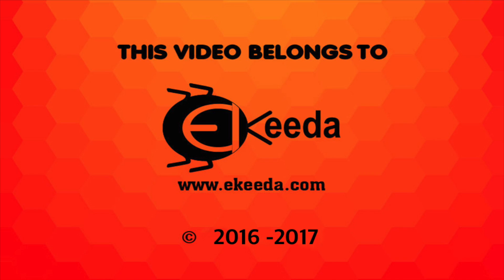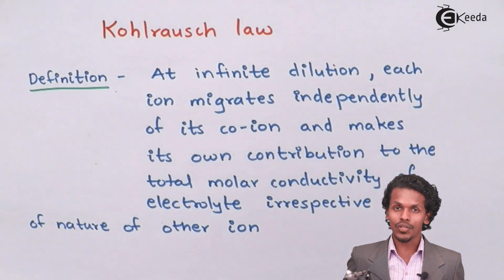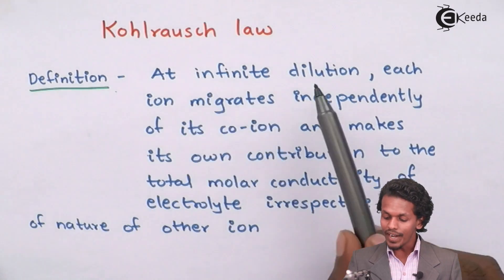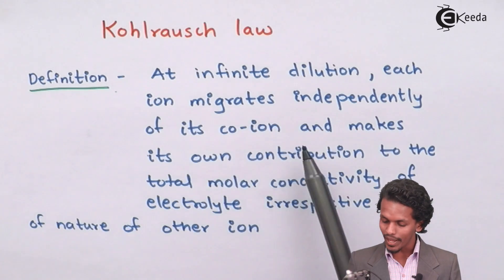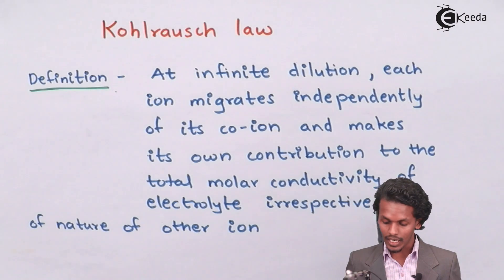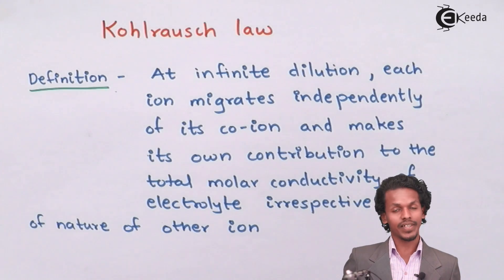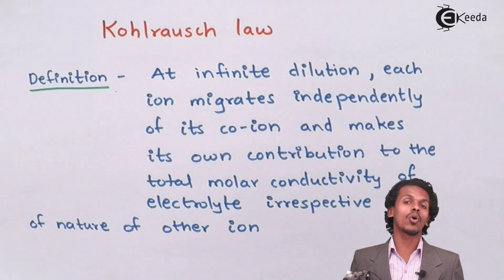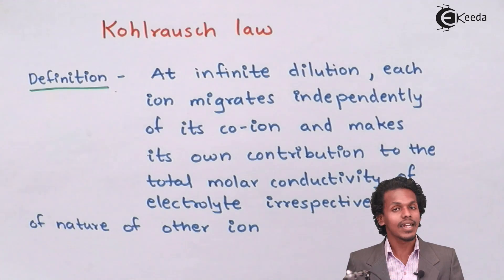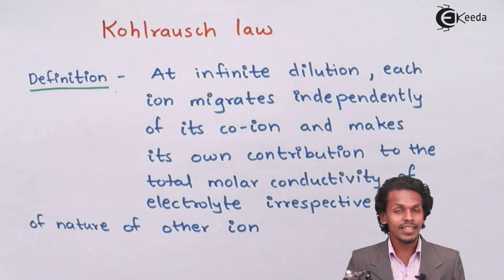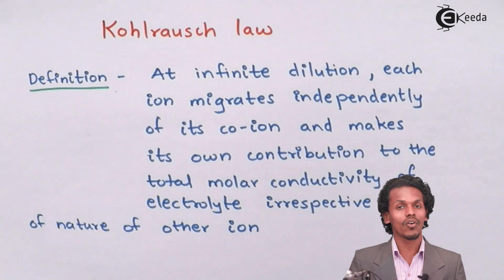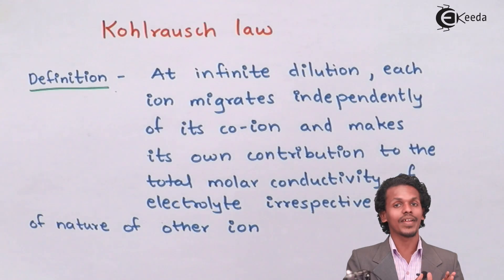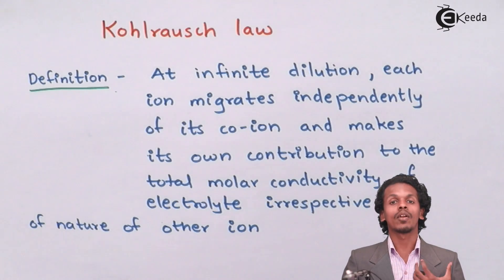So let us see what Kohlrausch's Law is. It states that at infinite dilution, each ion migrates independently of its co-ion and makes its own contribution to the total molar conductivity of the electrolyte, irrespective of the nature of the other ion. So at infinite dilution, both the cation and anion contribute some amount of molar conductivity to the whole electrolyte independently.